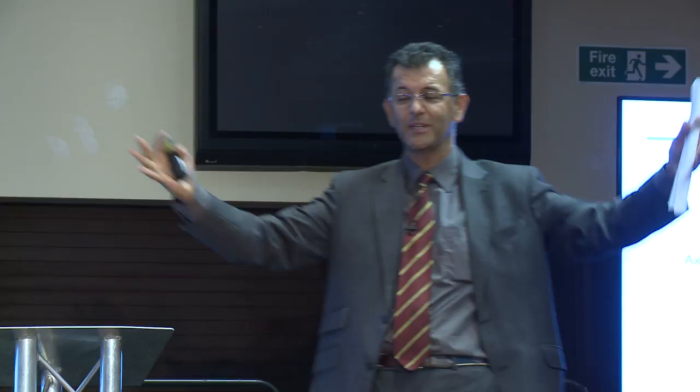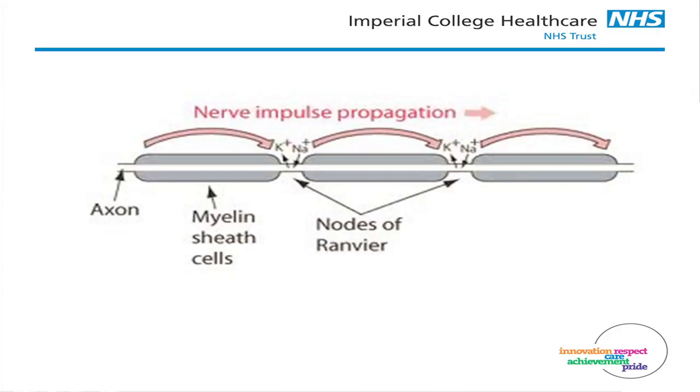Before molecular biology, they had to rely on macro things, and they studied the squid axon — that's where the action potential was studied. So this is a very important part of neurosciences. I haven't put the cell body in there, which is the nerve body, but effectively that's the axon or the nerve fiber. And around the nerve fiber you've got this insulation called the myelin sheath.